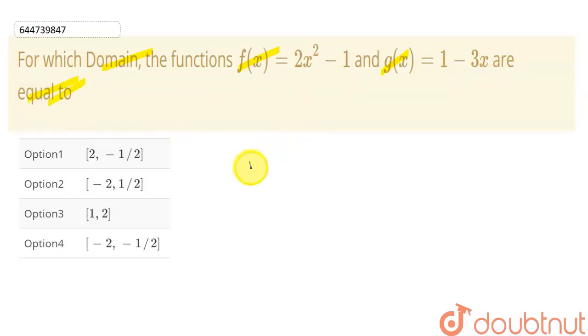So we have to equate them to find this. It is said f(x) is equal to g(x). So it will be 2x squared minus 1 should be equal to 1 minus 3x.